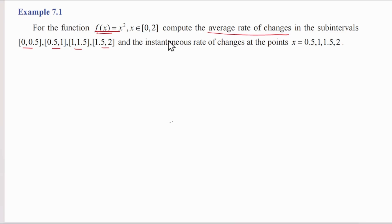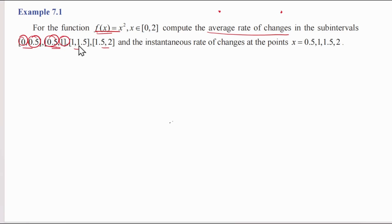The average rate of change is computed between two points — a starting point and an ending point. So the first interval has initial value 0 and final value 0.5. The second has starting value 0.5 and ending value 1. The third has starting value 1 and ending value 1.5. The fourth has starting value 1.5 and ending value 2.